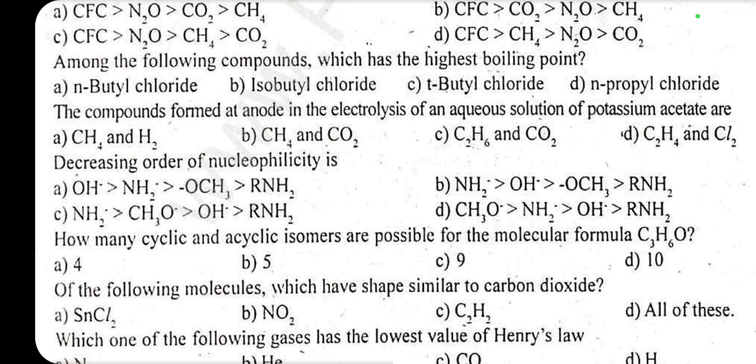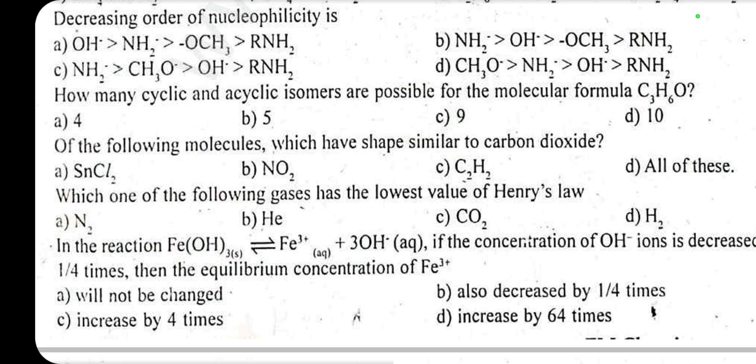The decreasing order of nucleophilicity: answer C — NH2⁻ > OCH3⁻ > OH⁻. How many cyclic and acyclic isomers are possible for molecular formula C3H6O? Of the following molecules, which has a shape similar to carbon dioxide? Answer C: acetylene.